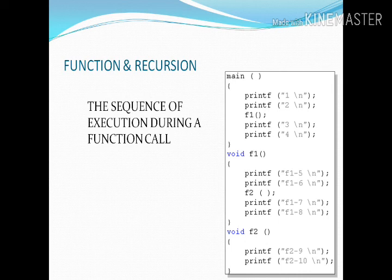You can get the sequence of execution during a function call from the code on screen. In main: printf 1, 2 — then f1 is called. f1 prints 5, 6, then calls f2. f2 prints 9, 10, returns to f1. f1 then prints 7, 8, returns to main. Main prints 3, 4. So the output order is: 1, 2, 5, 6, 9, 10, 7, 8, 3, 4. The sequence is now clear.